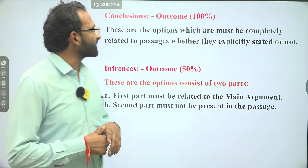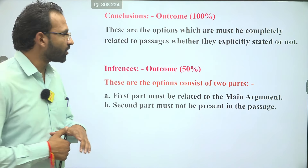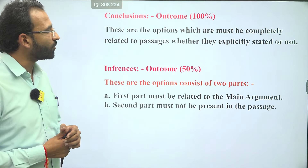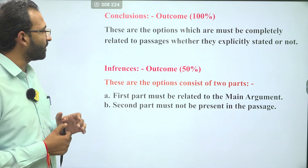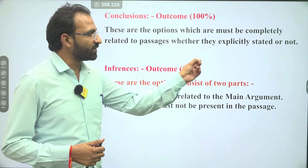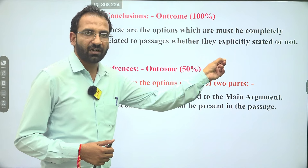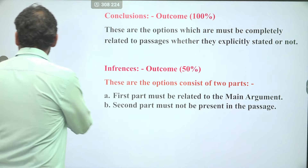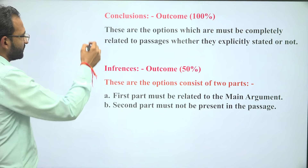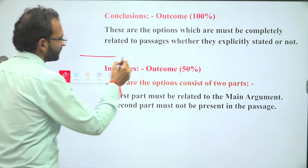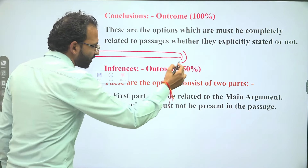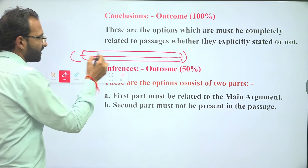Starting karte hain conclusions ke saath. Conclusion kya hota hai — conclusion hota hai outcome that is 100 percent. These are the options which must be completely related to the passage, whether they are explicitly stated or not. Out of the given options, the complete option must be related to the passage.